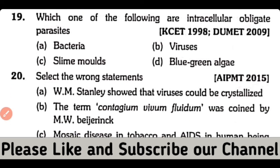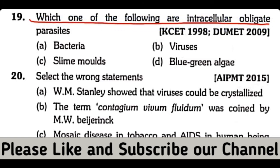Question number 19. Which one of the following are intracellular obligate parasites: bacteria, viruses, slime molds, or blue-green algae? So the correct answer is option B.